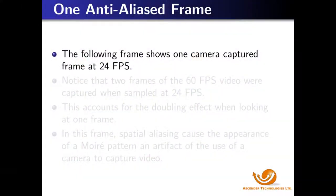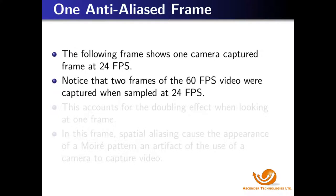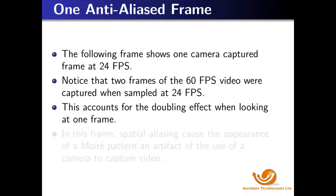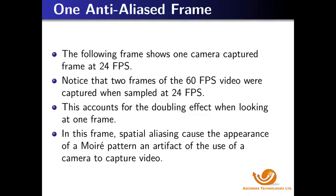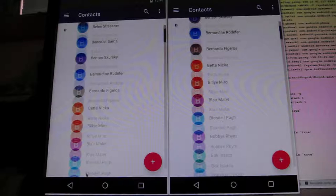The following frame shows one camera-captured frame at 24 frames per second. Notice that two frames of the 60 frames per second video were captured when sampled at 24 frames per second — this accounts for the doubling effect when looking at one frame. In this single frame capture from the camera, we see that every camera frame actually captures more than one video frame, because the video is running at 60 frames per second while the camera runs at 24 frames per second. Notice there really is no difference between the left and the right — the frame rates on both are identical.